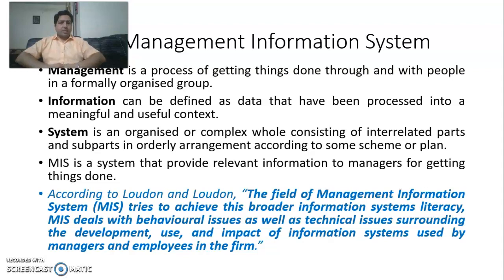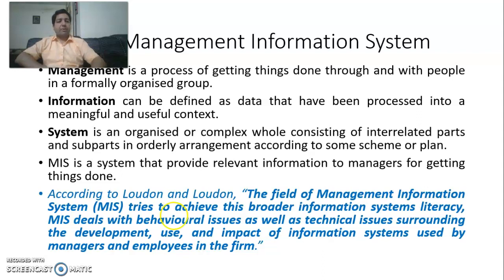If we discuss the management information system definition, it comprises of three terms: management, information, and system. Management is a process of getting work done by others, or getting things done through others, with people in a formally organized group. Information can be defined as data that have been processed into meaningful and useful context.